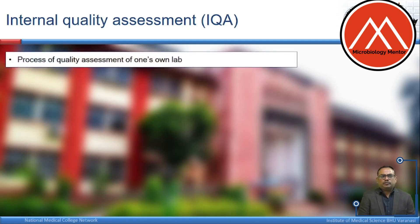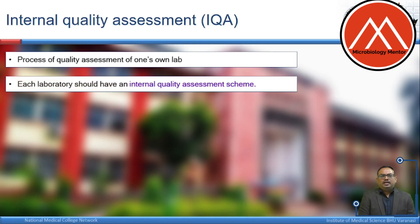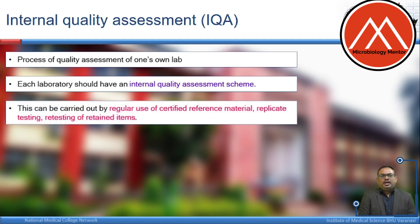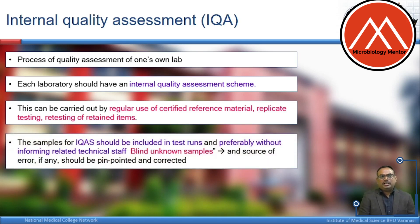Internal quality assessment is a process of quality assessment of one's own lab. Each laboratory should have an internal quality assessment scheme and through this scheme it should perform different activities. This can be carried out by use of regular certified reference material, replicate testing, and retesting of retained items as required. Samples for the internal quality assessment scheme should be included in test runs, preferably without informing the technician — as a blind unknown sample — and any source of error found should be pinpointed and corrective action taken.